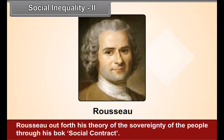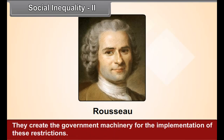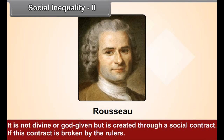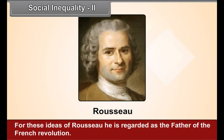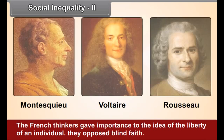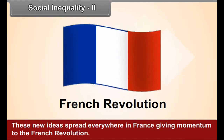Rousseau put forth his theory of the sovereignty of the people through his book Social Contract. According to him, man is born free. People voluntarily impose upon themselves certain restrictions so that society may function smoothly. They create the government machinery for the implementation of these restrictions — it is not divine or God-given, but created through a social contract. If this contract is broken by the rulers, people have a natural and moral right to overthrow such rulers. For these ideas, Rousseau is regarded as the father of the French Revolution. These new ideas spread everywhere in France, giving momentum to the French Revolution.